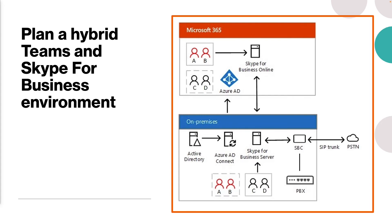In the split-domain configuration, users A and B are homed online but are discoverable by on-premises users, while users C and D are homed on-premises but are discoverable by online users. There are also infrastructure and topology requirements to consider. Microsoft supports multi-forest hybrid scenarios as well, including resource forest topology and multiple deployments of Skype for Business Server in multiple forests.